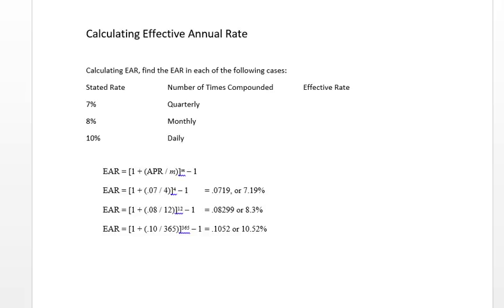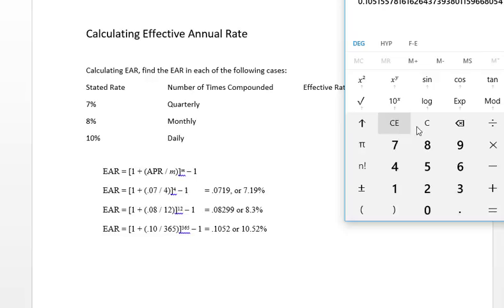So the problem is, this stated rate of 7%, we need to find the effective rate. We're just going to plug in the numbers here. So you've got an EAR of, let's pull up the calculator. Here we go. You get 0.07.